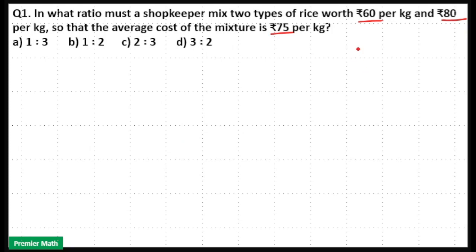Here a shopkeeper has two types of rice, one costs ₹60 and the other costs ₹80, but he wants to get ₹75 rice per kilogram. By mixing both of them he will get ₹75 rice.